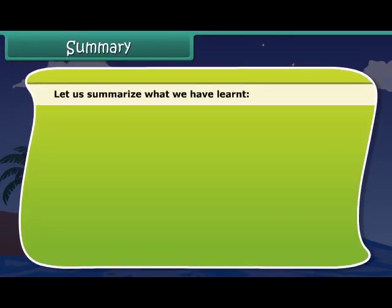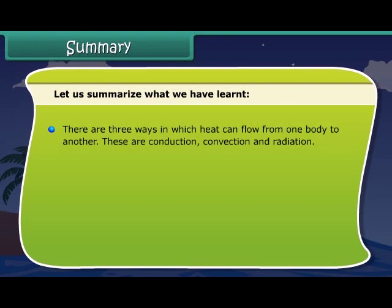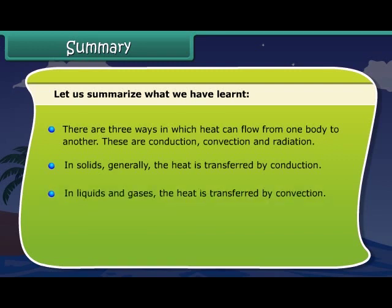Let us summarize what we have learnt. There are three ways in which heat can flow from one body to another: conduction, convection and radiation. In solids, heat is generally transferred by conduction. In liquids and gases, heat is transferred by convection. No medium is required for the transfer of heat by radiation.